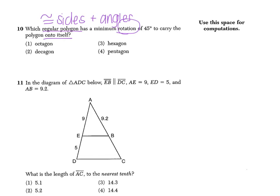An octagon, think about an octopus, has eight sides, just like an octopus has eight legs. A decagon has ten sides, just like a decade has ten years. A hexagon has six sides, and a pentagon has five sides. Now it tells me that the minimum rotation needs to be 45 degrees, so I should definitely have something that's equal to 45.